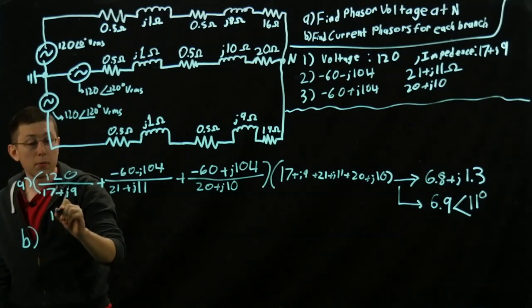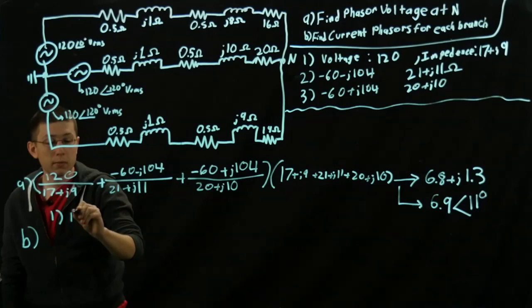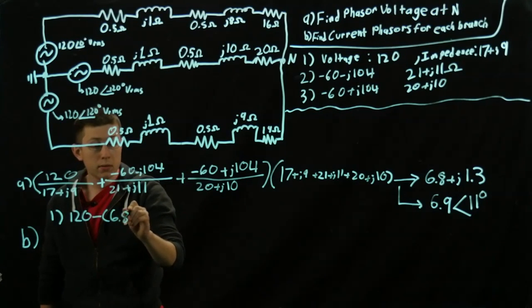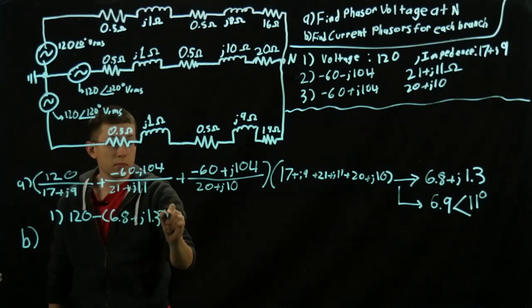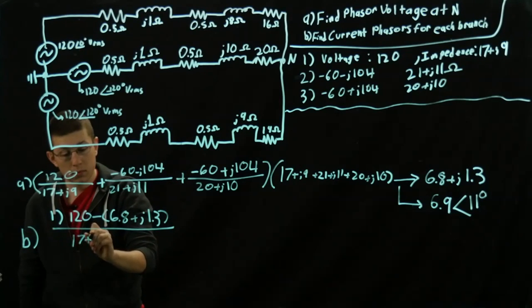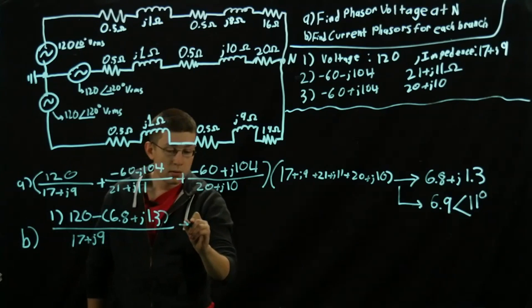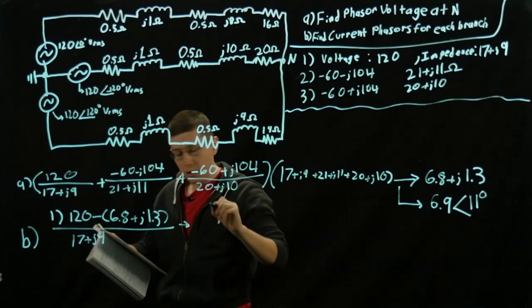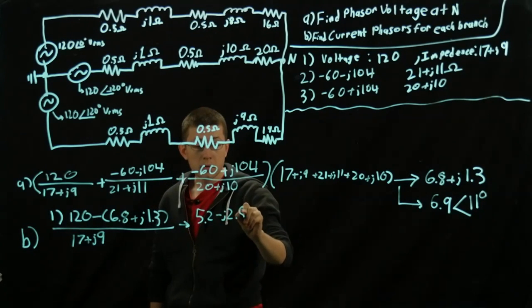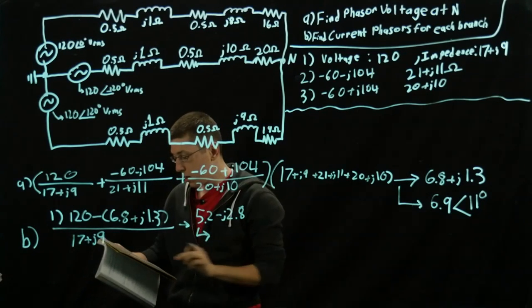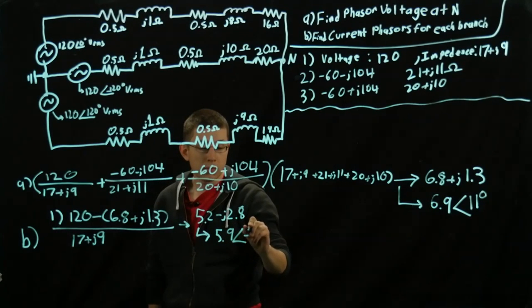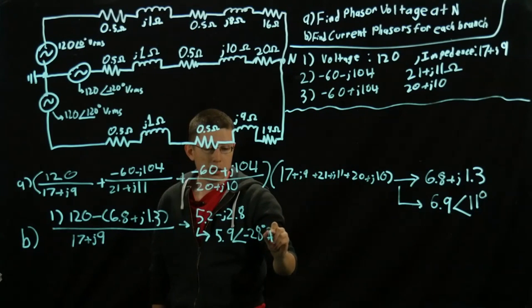So for Part 1, it'll just be 120 minus the quantity 6.8 plus J1.3, all over that first impedance. And that gives us 5.2 minus J2.8 amps, which of course will convert to the phasor of 5.9 at negative 28 degrees. That's an ARMS.